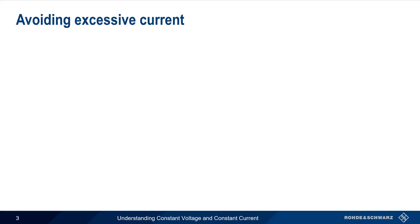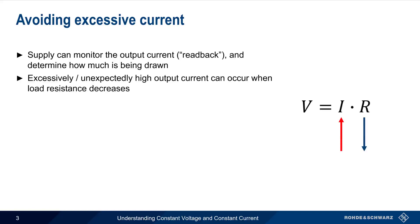Modern Benchtop DC Power Supplies typically monitor the output and can determine, in real time, how much current is being drawn by the load. Excessively and or unexpectedly high current can occur when load resistance decreases.